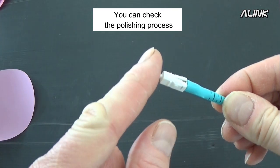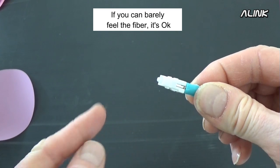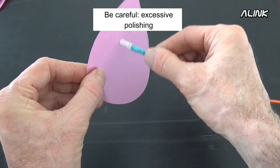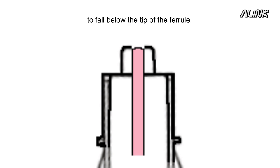You can check the polishing process by gently touching the end of the ferrule with a finger. If you can barely feel the fiber, it's okay. Be careful. Excessive polishing could cause the end face of the fiber to fall below the tip of the ferrule or could break the fiber.